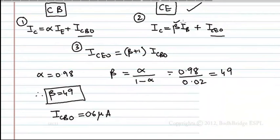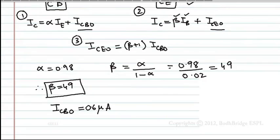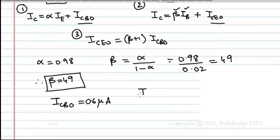Beta I know, IB is 20 microamperes. ICEO I want but ICBO is given, therefore ICEO is how much? ICEO equals (β plus 1), which is 49 plus 1, times ICBO. ICBO is 0.6 microamperes, right? This is 50 times 0.6 which is 30 microamperes.